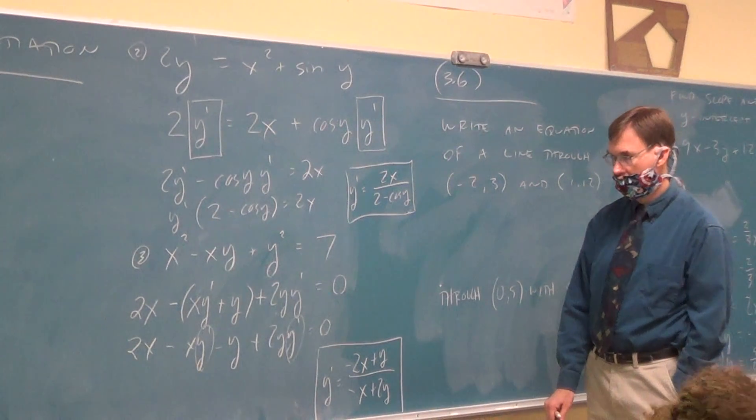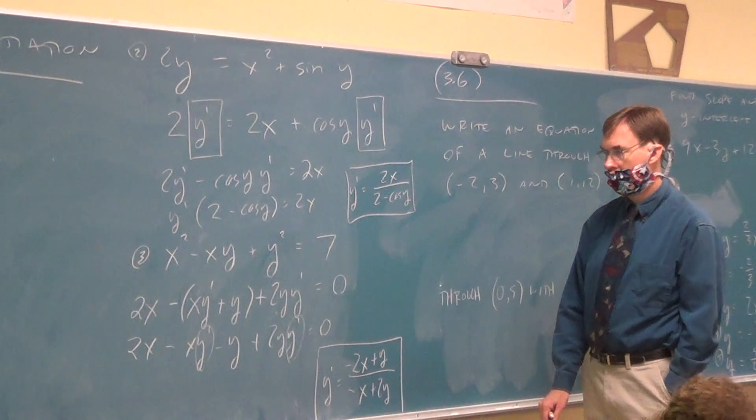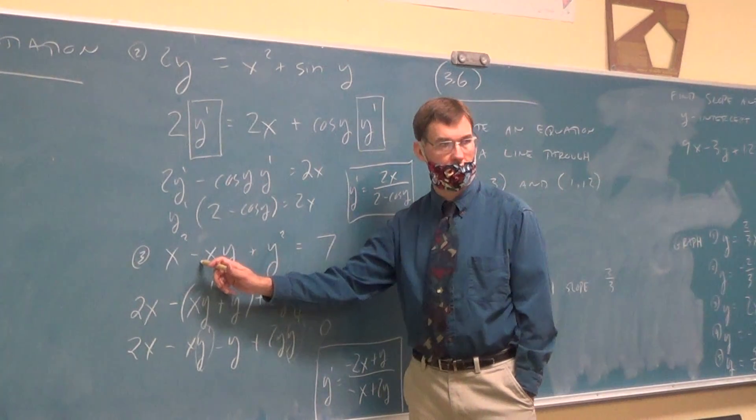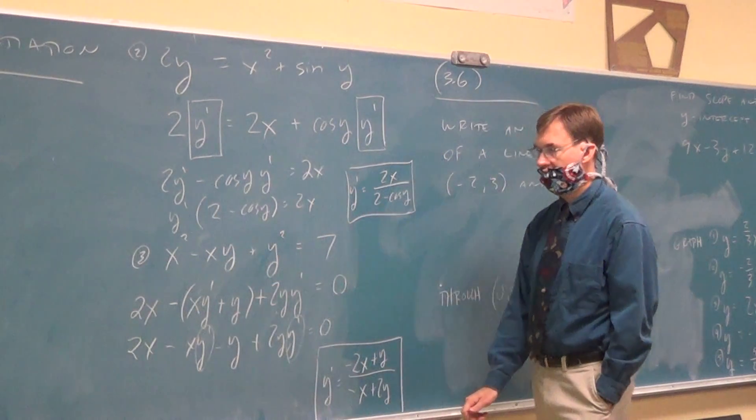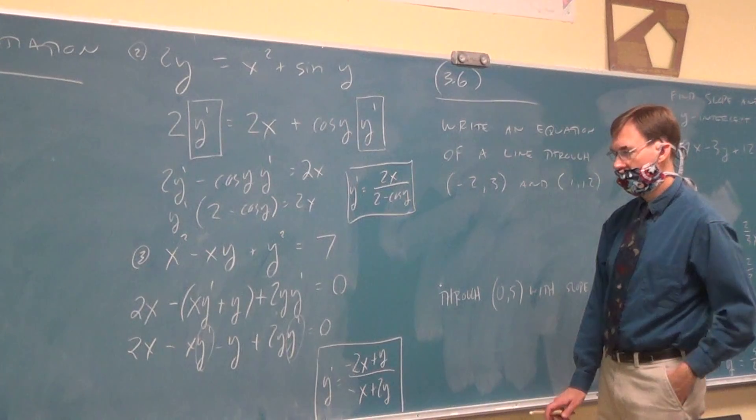Could you have turned the original thing into X minus Y squared and then did the chamber? No. If this were a 2, yes. Oh. It doesn't quite factor. But close.